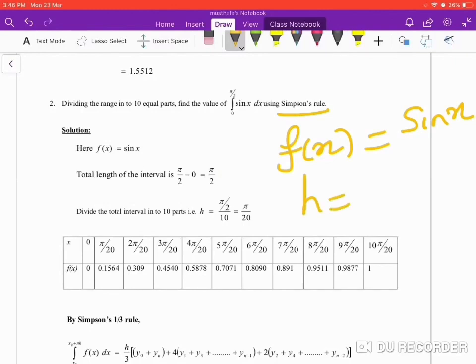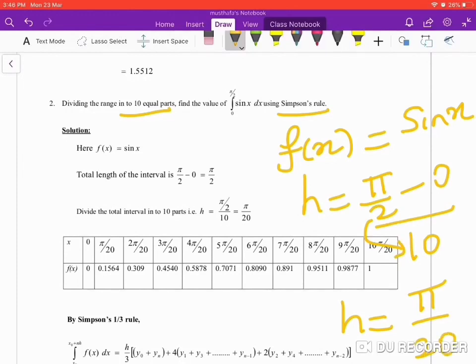And then we need to define the value of h. Already we have seen how to find the value of h. The formula is upper limit minus the lower limit over the number of intervals. In this problem, it is given as divide into 10 equal parts, so we will divide it by 10. What is the value of h? It will be pi by 2 minus 0 is pi by 2, and this 2 will come to the denominator and then multiplication with 10 will give you 20. So the value of h is pi over 20.